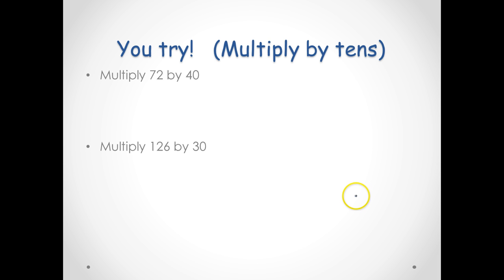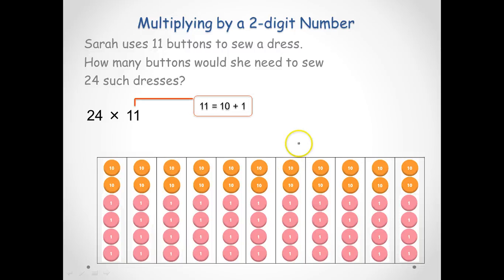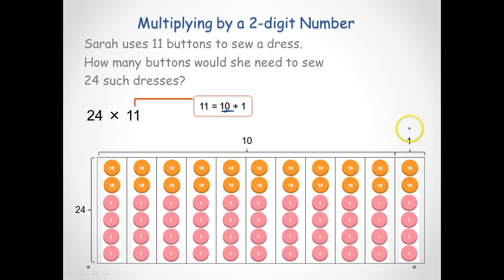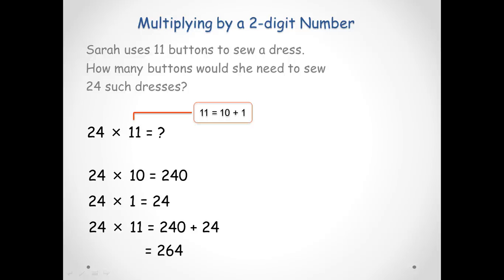Now you pause and try these sums. Let's multiply a number by a 2-digit number. Sarah uses 11 buttons to sew a dress — how many buttons would she need to sew 24 such dresses? So we have 24 times 11. I can split 11 into 10 and 1, giving 10 groups of 24 and 1 group of 24. So 24 times 10 is 240, and 24 times 1 is 24. Therefore 24 times 11 is 240 plus 24, which is 264.